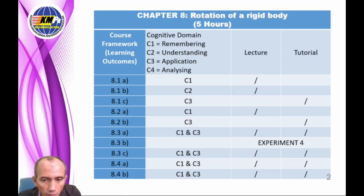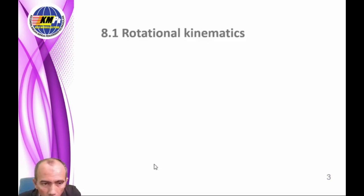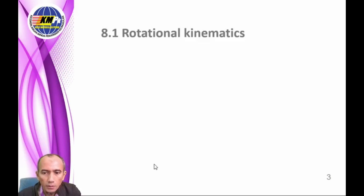This table shows the level of syllabus contents. C1 and C2 refer to 'define' and 'explain'. C3 refers to 'application'. What you will learn involves physics quantities related to the rotation of a rigid body.